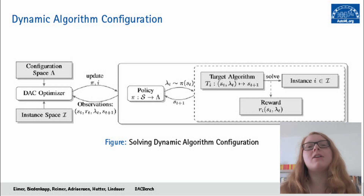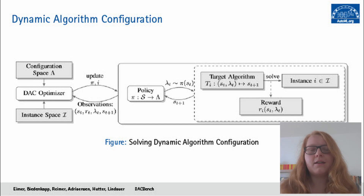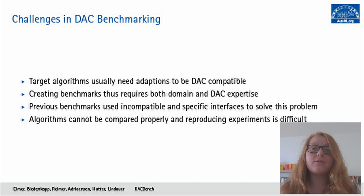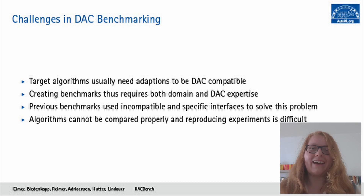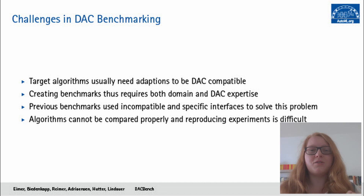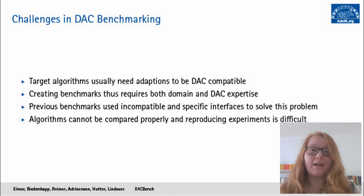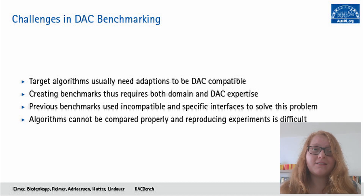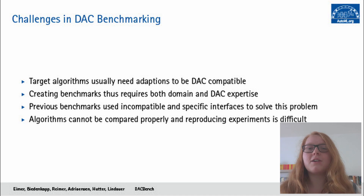In principle we have seen great results with DAC on different domains like AI planning or evolutionary computation, but benchmarking DAC has been hard so far. The main reason is that most target algorithms need some sort of adaptation to be compatible with DAC. These code-level adaptations often have to be done in conjunction with a domain expert, so we need a combination of domain expertise and DAC expertise in the same place — which is of course seldom. Additionally, the interfaces that have resulted in previous benchmarks are often specialized and not compatible with each other, making it very hard to compare different DAC methods across benchmarks, and not trivial to reproduce existing experiments.